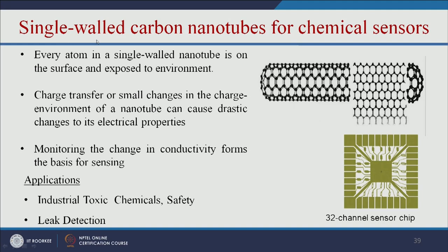For chemical sensing using single wall nanotubes, every atom is on the surface and exposed to the environment. Charge transfer or small changes in the charge environment can cause drastic changes to the electrical property of the nanotube, enabling chemical sensors useful for leak detection and other applications.